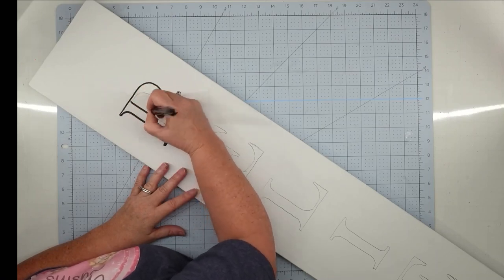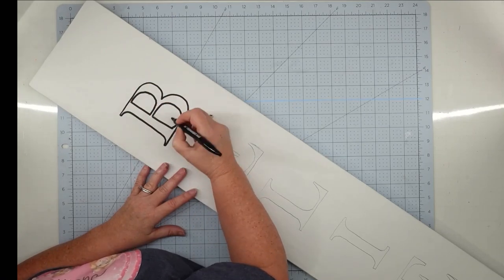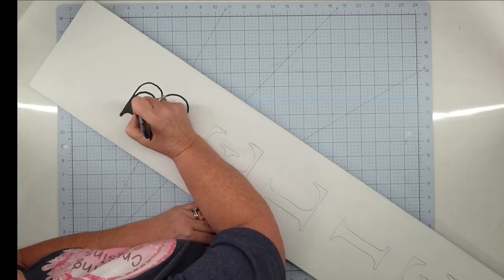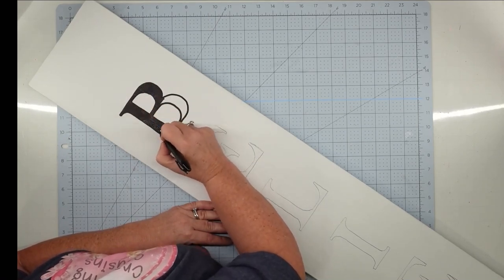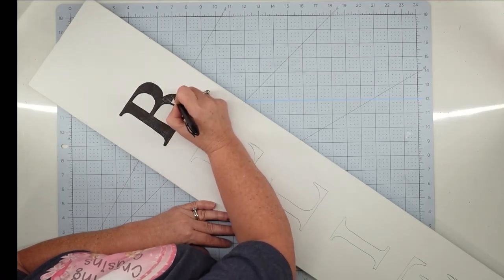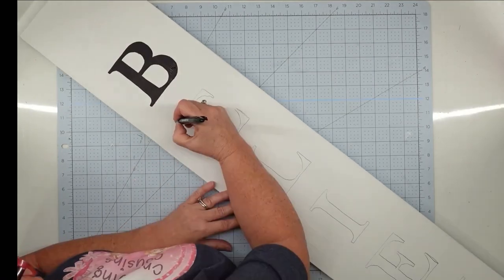Now that my letters are transferred over to my project I'm going to use a permanent marker and fill them in. I love these Jot permanent markers from the Dollar Tree. They have such a good flow. To me they work even better than the Sharpies do.